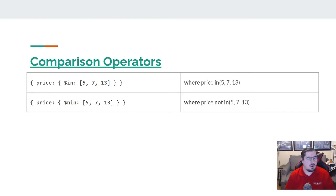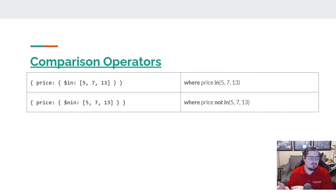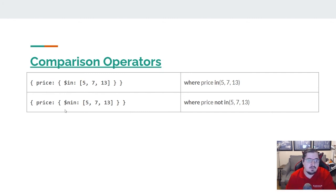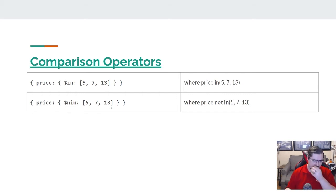There are two more operators you can use: $in and $nin. $in says that this value must be one of the listed values, and $nin says that it needs to be not one of the listed values. So here we're saying the price has to be 5, 7, or 13 — or with $nin, it can't be 5, can't be 7, and it can't be 13.